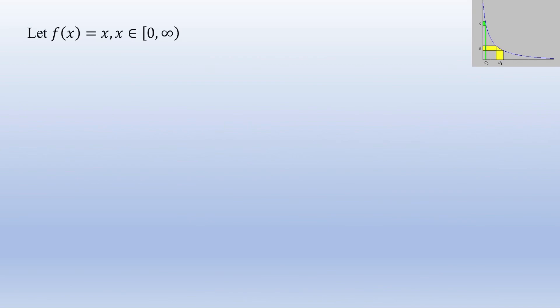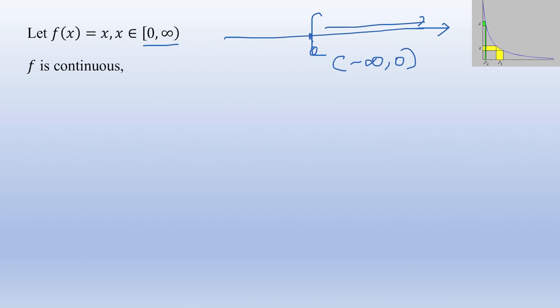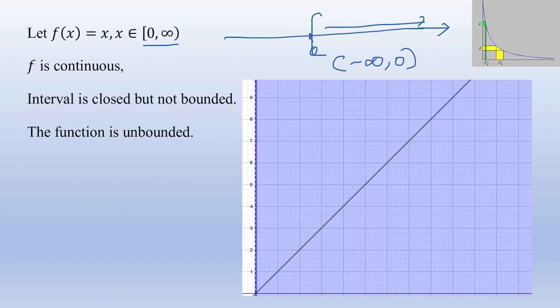For example, the function f(x) = x on the interval [0, ∞) shows that the boundedness condition on the interval is necessary. Here the interval [0, ∞) is closed but not bounded, and the function is continuous yet unbounded. Similarly, considering f(x) = x on (-∞, 0] gives an open set's complement which is closed, but the function is still unbounded because f(x) = x goes to infinity.